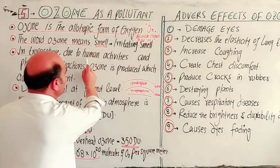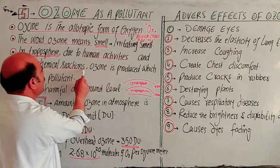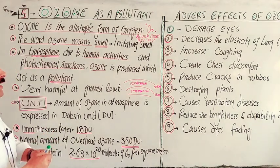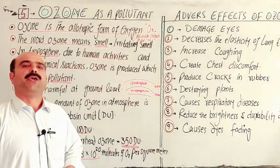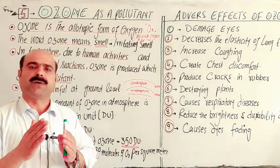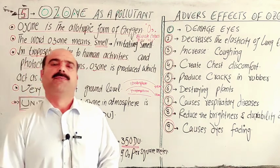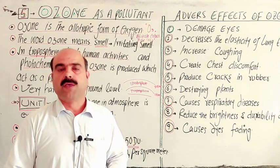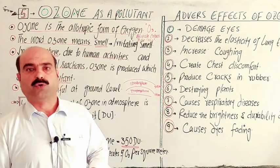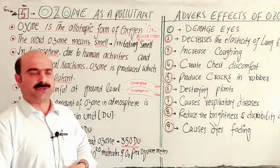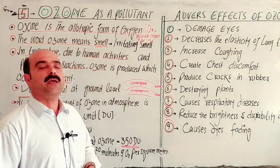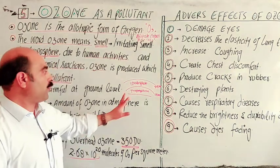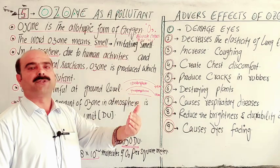In the troposphere, due to human activities and photochemical reactions, ozone is produced which acts as a pollutant. Human activities include the use of refrigerants, coolant gases, refrigerators, Freon gases, and chlorofluorocarbons (CFCs), which are released into the atmosphere. Sunlight radiation also drives photochemical reactions that lead to ozone formation in the troposphere.